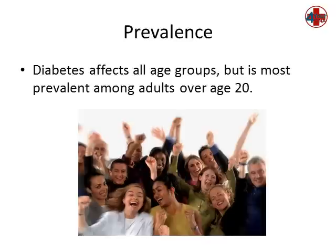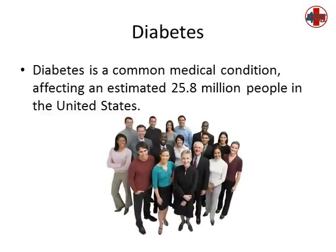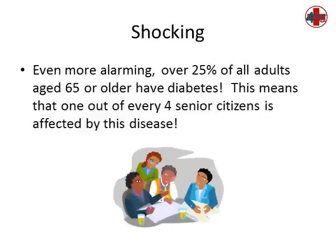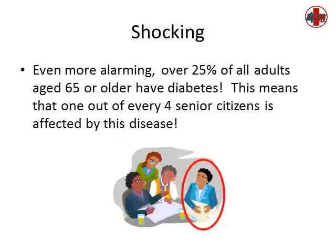Diabetes affects all age groups, but it's most prevalent among adults over age 20. Diabetes is a common medical condition, affecting an estimated 25.8 million people in the United States. Even more alarming, over 25% of all adults age 65 or older have diabetes. This means that one out of every four senior citizens is affected by this disease.